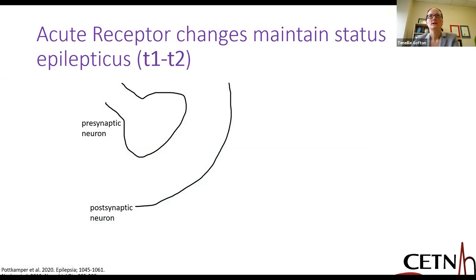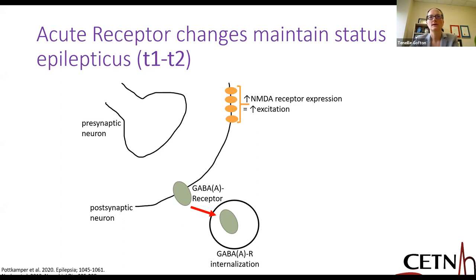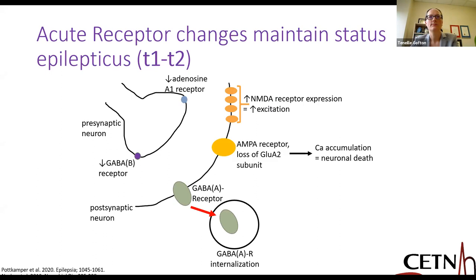Coming back to the pathophysiology, we see a lot of receptor changes that help maintain status and lead from the transition of T1 to T2 — abnormally prolonged seizures. At early stages, we get internalization of GABA receptors, making it harder to target these with first-line therapies. There's increased expression of NMDA receptors at the postsynaptic neuron, increasing excitation. There are also changes in adenosine receptors, GABA-B, and the AMPA receptor, leading to calcium accumulation and neuronal cell death.